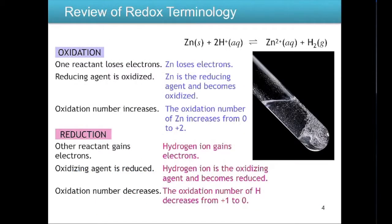Here's another example of a redox reaction: zinc plus acid in equilibrium with zinc 2+ and hydrogen gas. In a redox reaction, there's always going to be one reactant that loses electrons and one reactant that gains electrons. We look at one component on the reactant side and its corresponding product, similar to how we examine conjugate acid-base pairs.